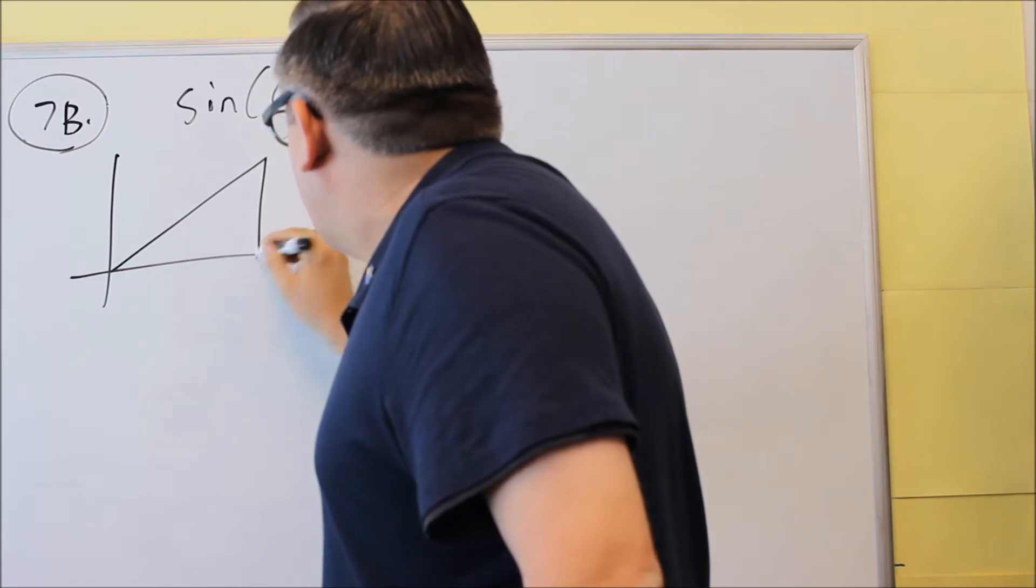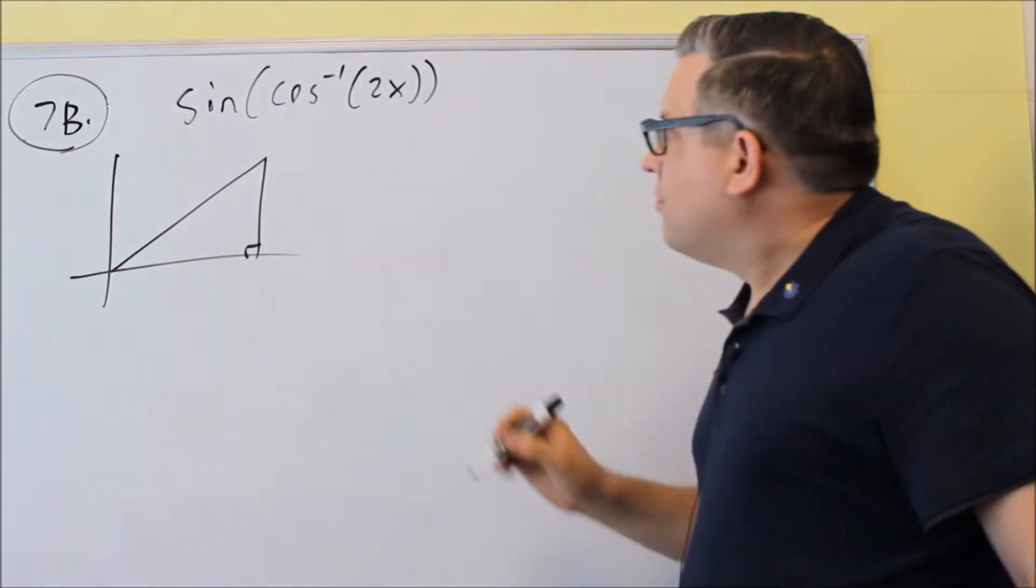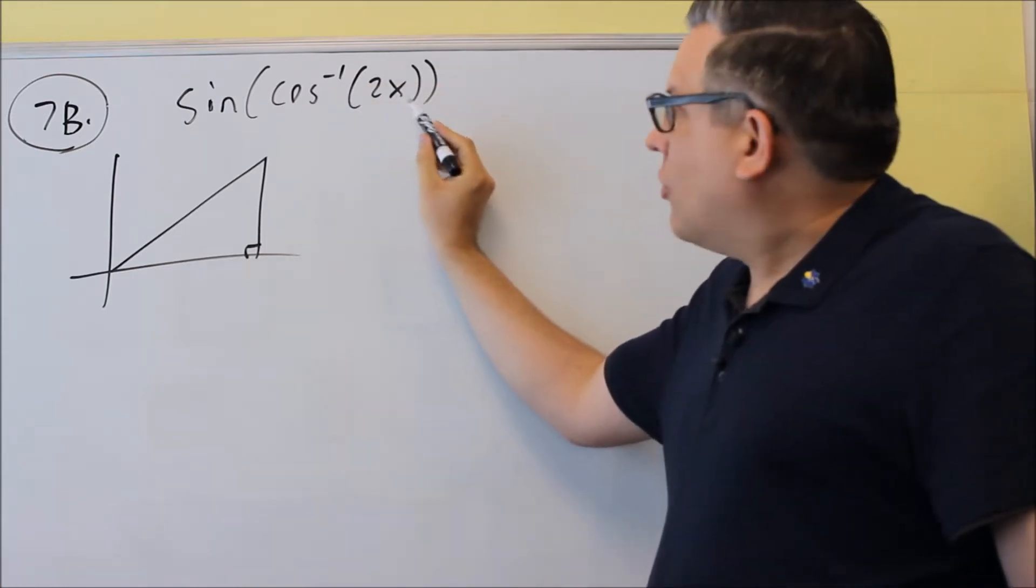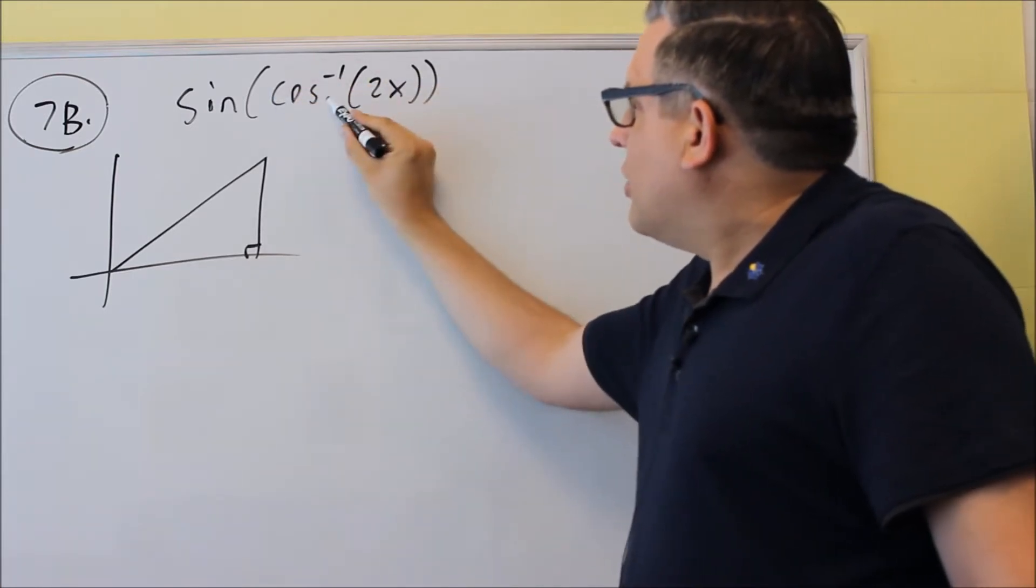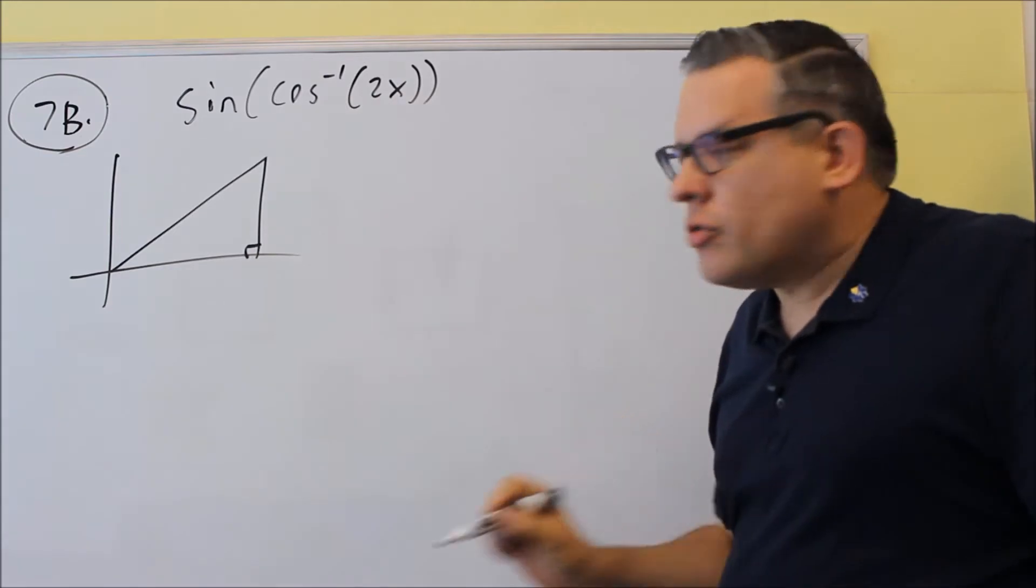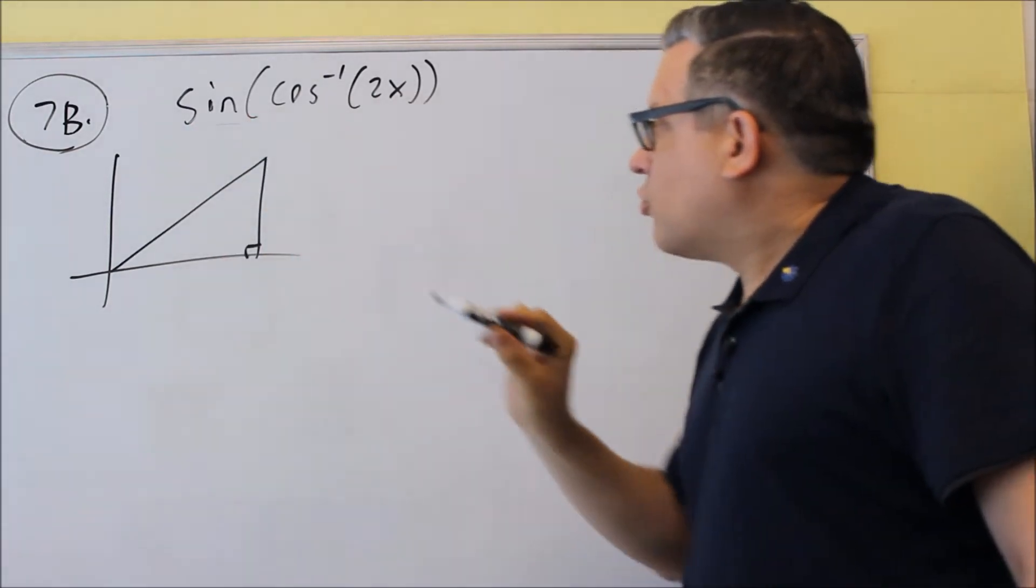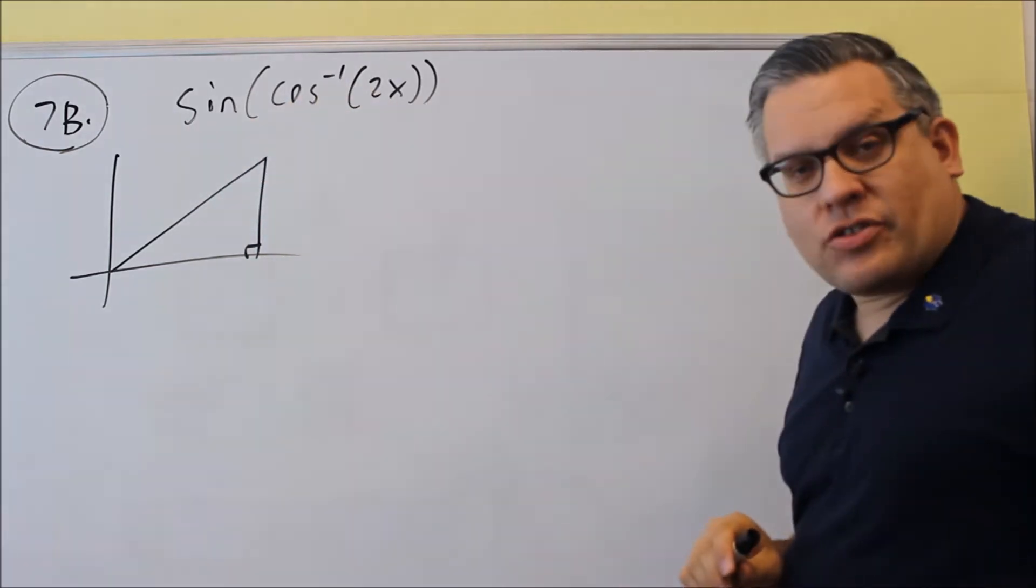So what we have to do here is draw a right triangle, and we're going to label it based on what you have inside here. So what's inside these parentheses, the inverse cosine 2x, that's what we're going to use to label our triangle. The outside one is what we'll do last in order to get our final answer.